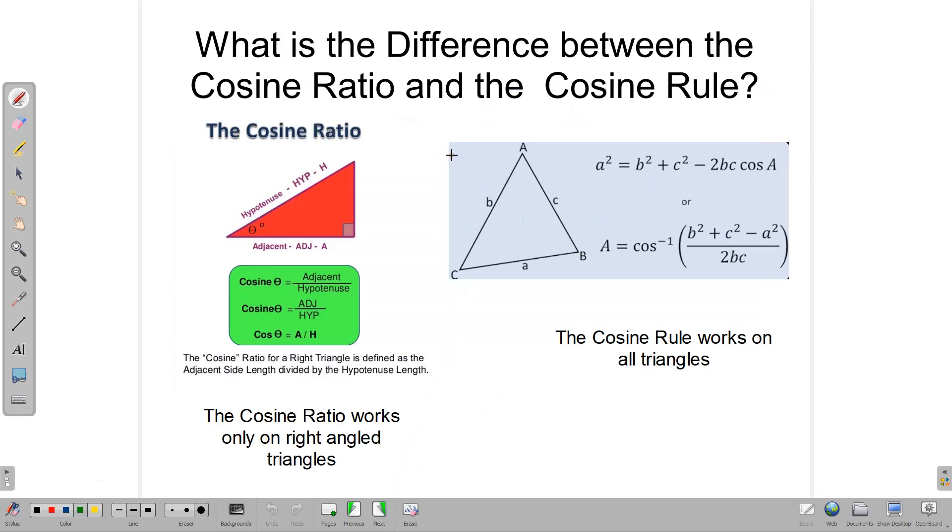So what is the difference between the cosine rule and the cosine ratio? In trigonometry, we have three primary ratios: sine, cosine, and tangent. The cosine ratio is defined as the adjacent side divided by the hypotenuse, and that is related only to right-angled triangles. The cosine rule applies to all triangles, including the right-angled triangle.